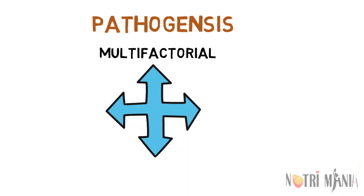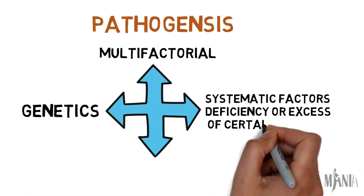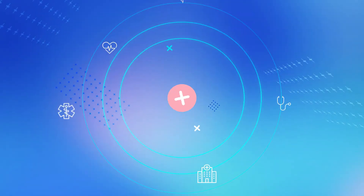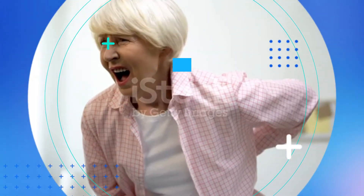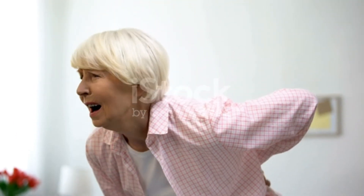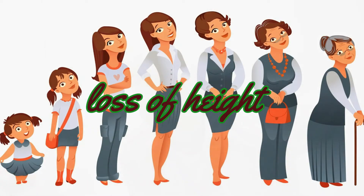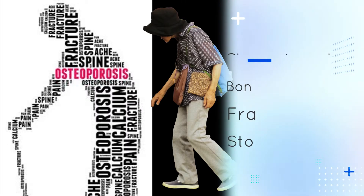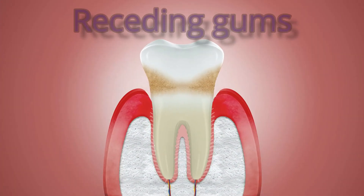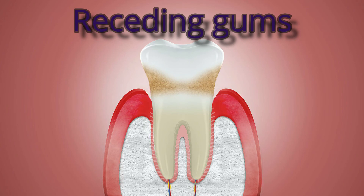The pathogenesis of osteoporosis is multifactorial and takes into account genetics, systematic factors such as deficiency or excess of certain hormones, environmental factors, and their interaction. The signs and symptoms of osteoporosis include back pain caused by a fractured or collapsed vertebra, loss of height over time, a stooped posture, and a bone that breaks much more easily than expected.